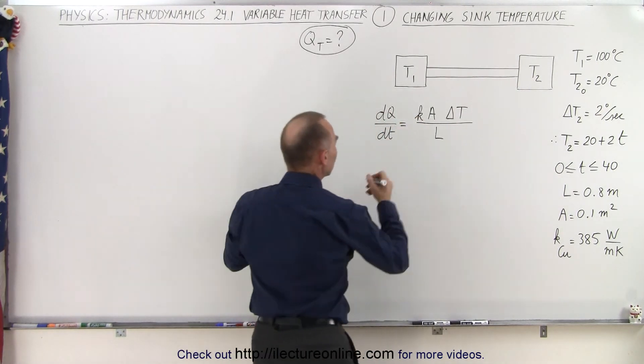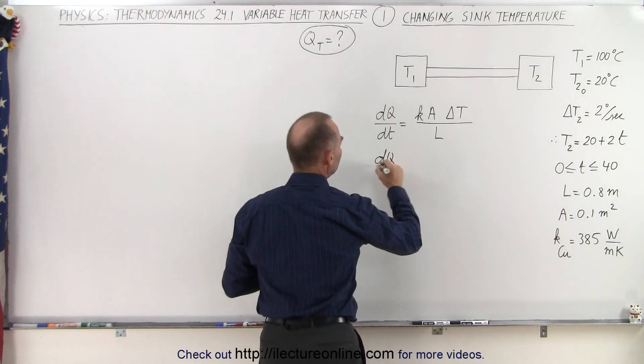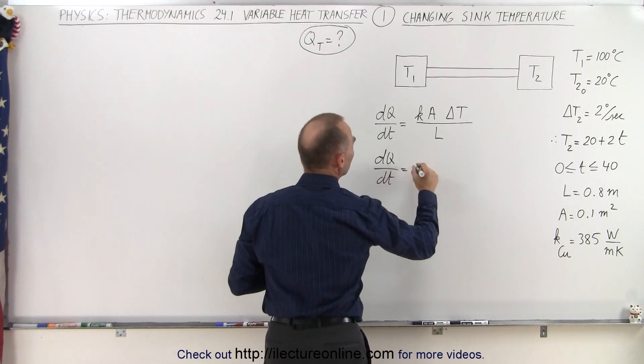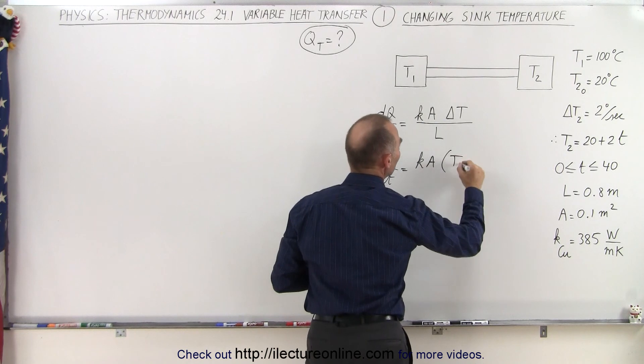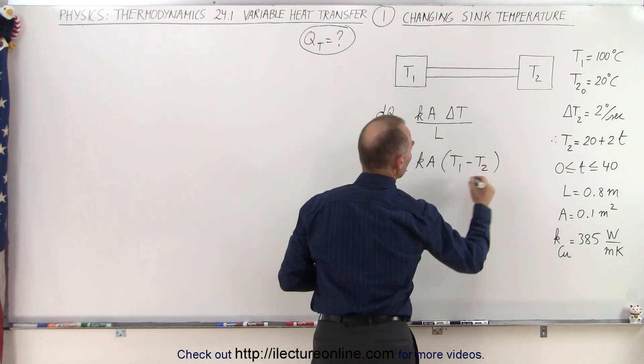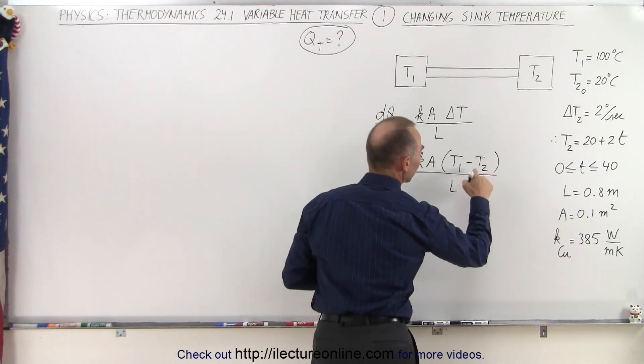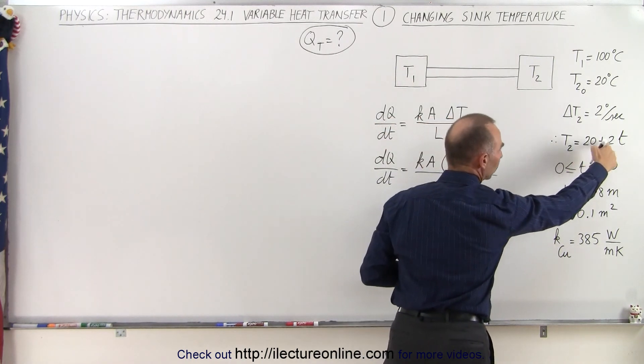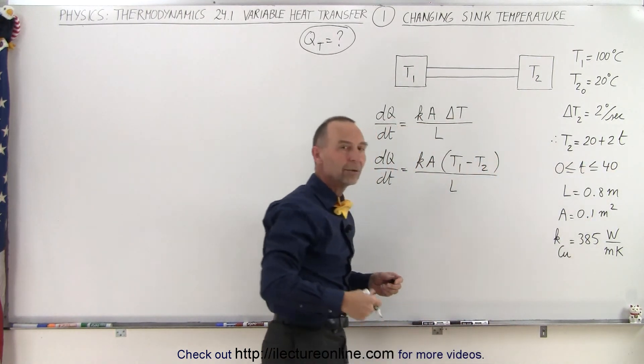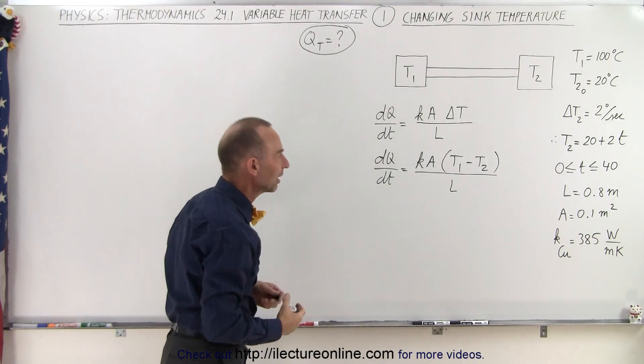So in this case, we can say that dQ/dt is going to be equal to kA times the difference between T1 and T2, all divided by L. And of course, T2 can now be written in terms of 20, the initial temperature, plus 2 times t, 2 degrees for every second that's gone by.